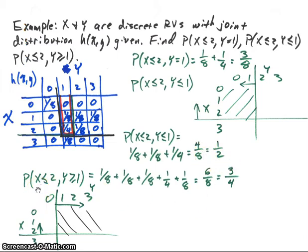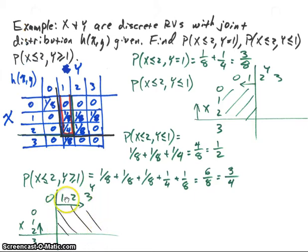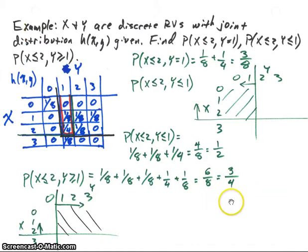For the probability that X is less than or equal to 2 and Y is greater than or equal to 1: we have the same line for X less than or equal to 2 with an arrow going up. For Y greater than or equal to 1, I drew a line with an arrow going to the right. Where those overlap is the area we sum for this probability — I drew a black line to show that area, which is in this box. The non-zero values are 1/8, 1/8, 1/8, 1/4, and 1/8. Summing those gives 6/8 or 3/4. To find any probability, identify the area described, then sum all H values in that area.